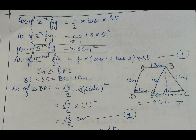Figure number 5 is also a right-angled triangle. Again, the formula for area is: half × base × height. Putting in the values: half × 1.5 × 6, the final answer is: area of the fifth figure = 4.5 cm².